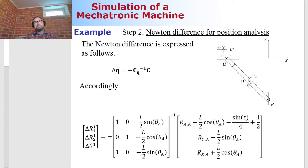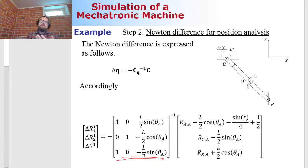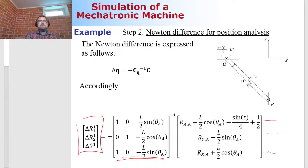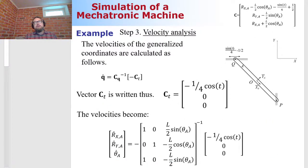For velocity analysis: differentiate the constraints with respect to time. The first constraint has time explicitly in it — sin(t)/4 — so its time derivative gives (1/4)cos(t). The other constraints have no explicit time, so those entries on the right-hand side are zero. Substitute the velocity of generalized coordinates to solve. For acceleration: the Jacobian matrix is not a function of time, so that term is zero. The right-hand side is computed from the Jacobian times velocity, differentiated with respect to generalized coordinates.